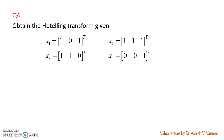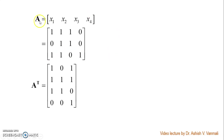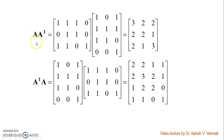There is another similar question: find the Hotelling transform given four vectors x1, x2, x3, and x4. Repeat the same steps — create matrix A from the vectors, find A transpose, compute AA transpose (again a 3×3 matrix), and compute A transpose A (again a 4×4 matrix). There will be 3 eigenvalues and 3 eigenvectors for AA transpose, and 4 eigenvalues and 4 eigenvectors for A transpose A.